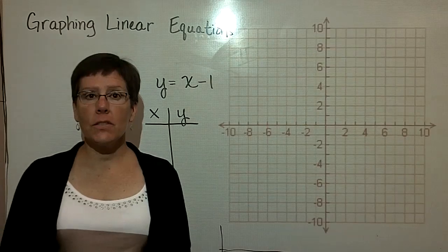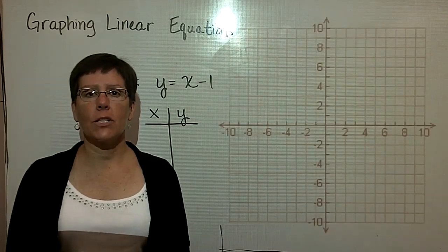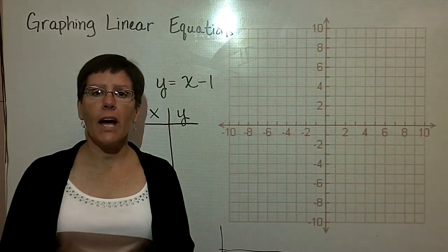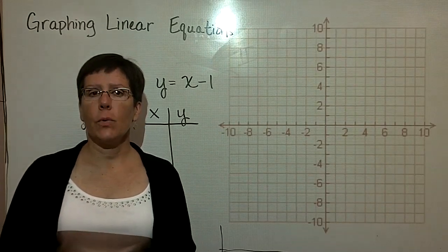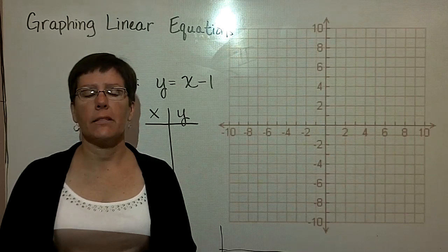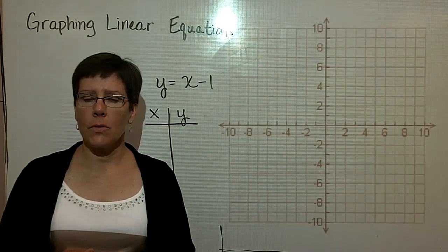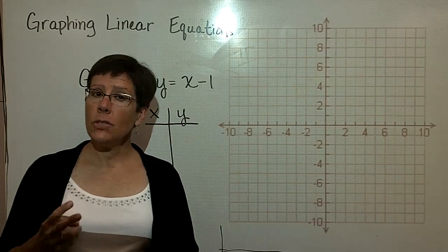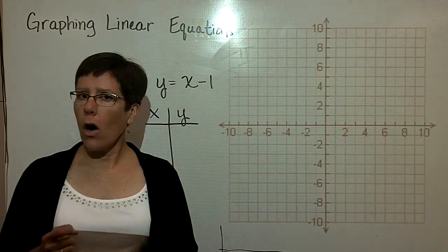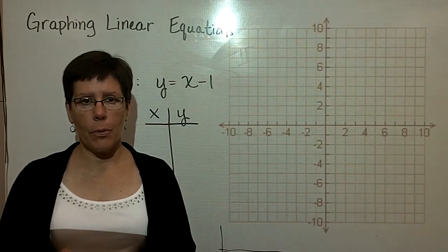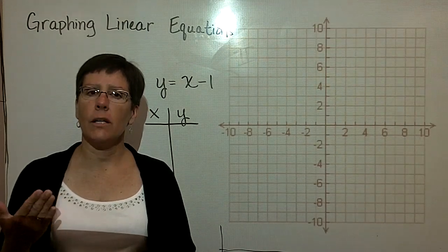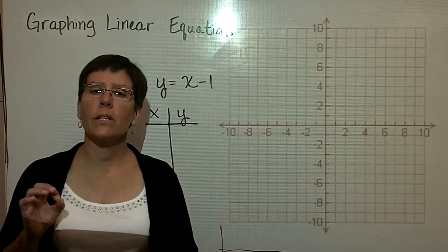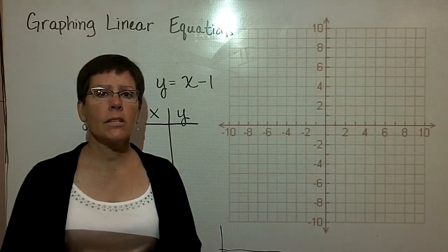There are multiple ways to graph equations, and we're focusing on graphing linear equations. The way I'm going to present in this particular segment is by picking a value for x, putting that into the equation, finding out what y needs to be in order for that statement to be true, and doing that three times. A linear equation is something that is straight, and two points would make a straight line, but we always find a third point as a check to be sure that we have not made any mistakes in our arithmetic. The third one is kind of a checking point.